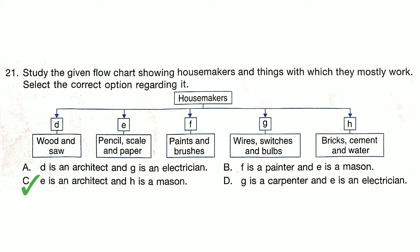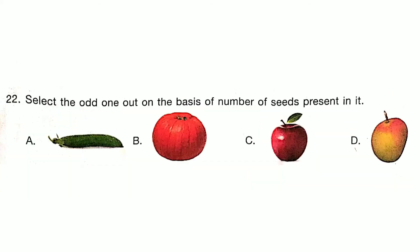E is an architect and H is a mason. Select the odd one out on the basis of number of seeds present in it. Answer is Option D.